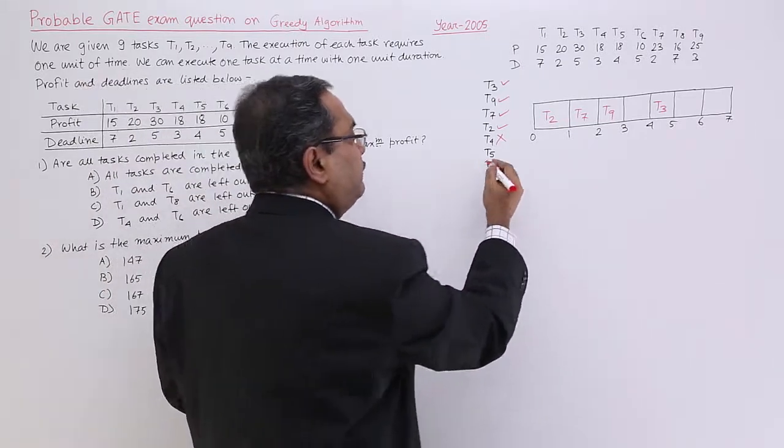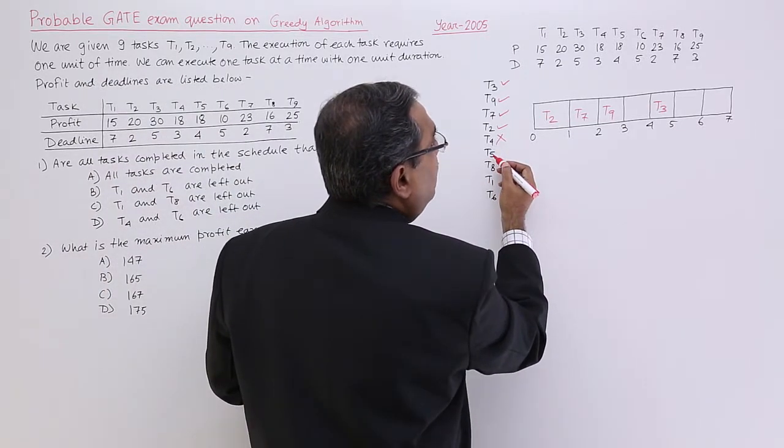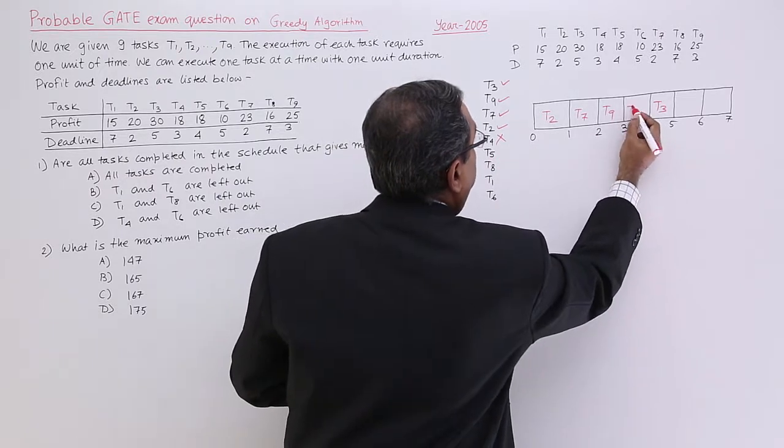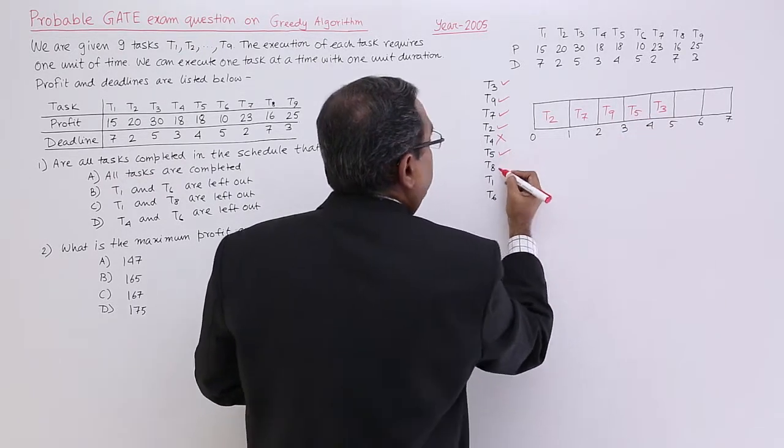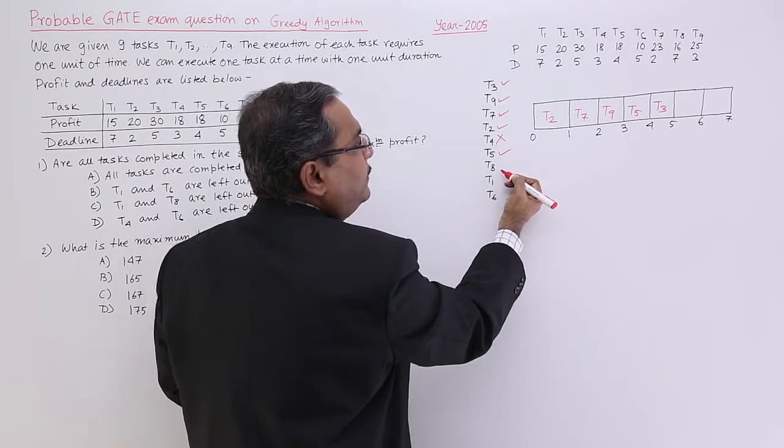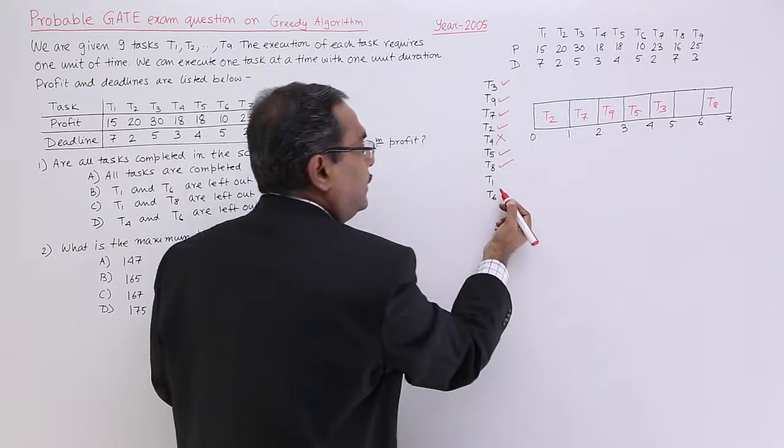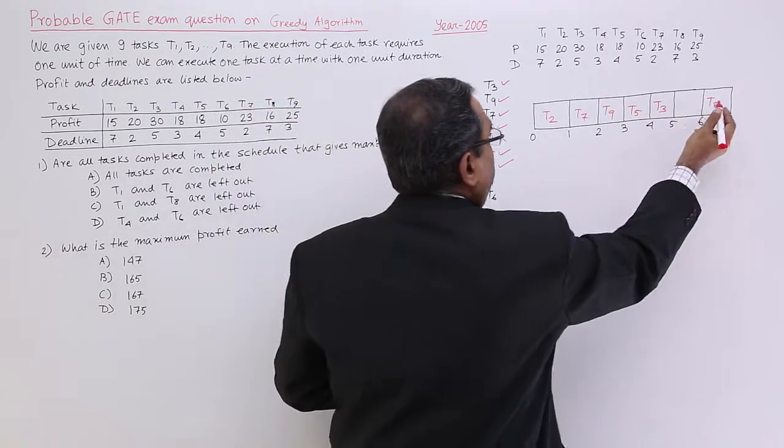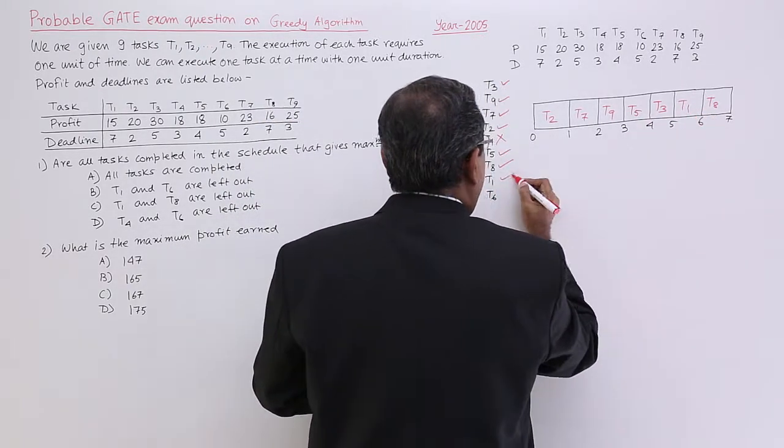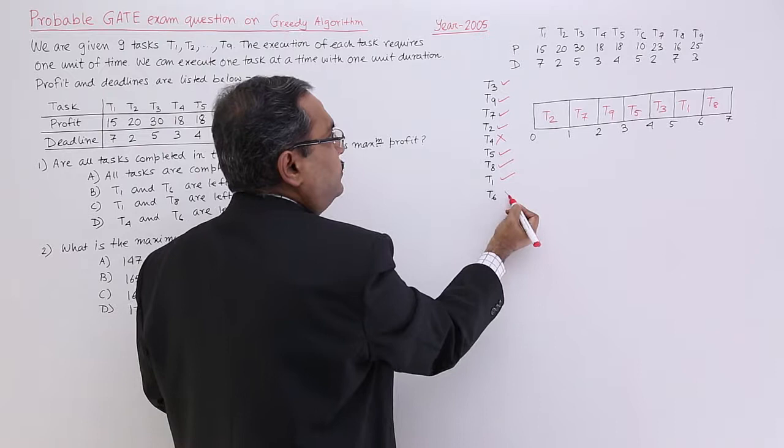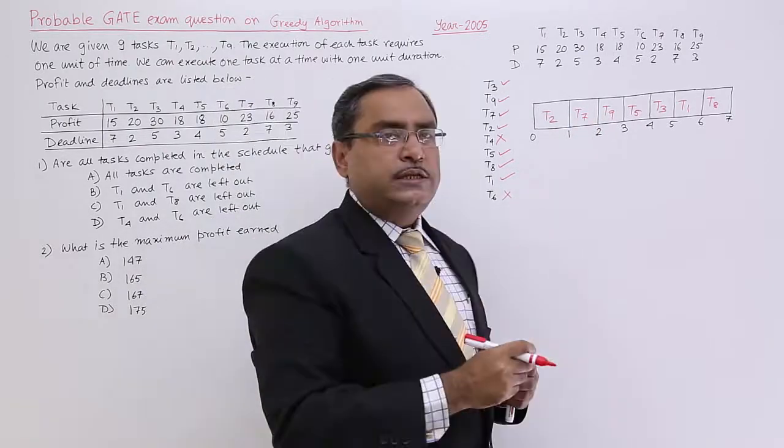Now we are going for T5. T5 means slot number 4. Yes, T5 can be allocated. Then going for T8, T8 is 7, T8 can be allocated. Now going for T1, T1 is 7. This slot is there free for T1. What about T6? Obviously T6 cannot get allocated because there are no free slots.